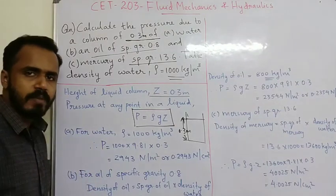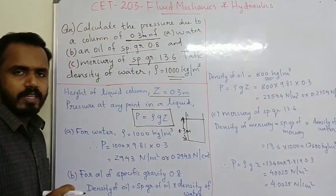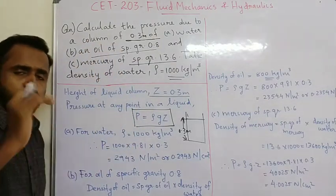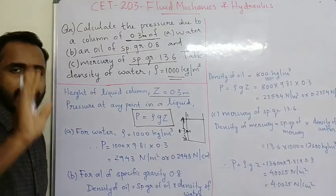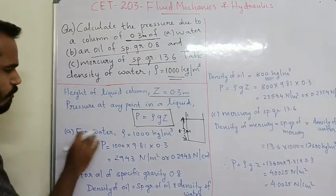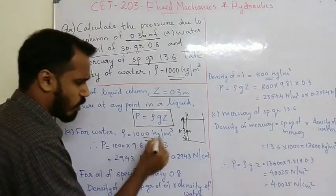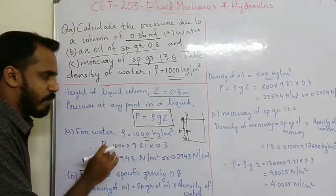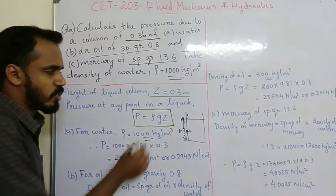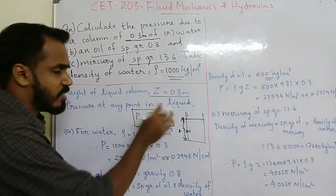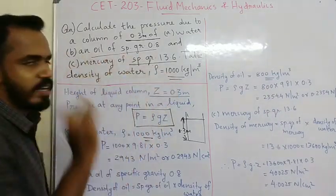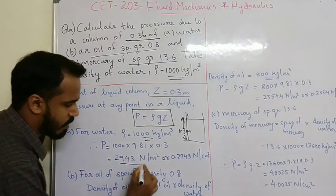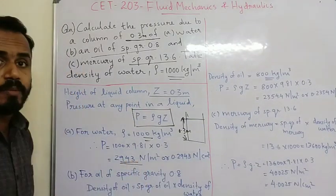For water: substituting the values, P = 1000 × 9.81 × 0.3. The result is 2943 N/m².